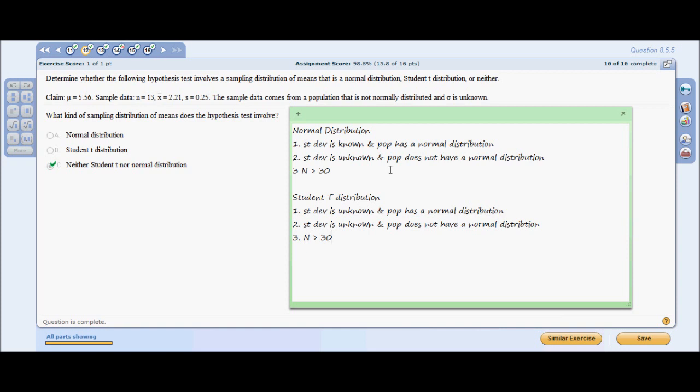Number 12: Determine whether the following hypothesis test involves a sampling distribution of means that is a normal distribution, student T distribution, or neither. The sample data comes from a population that is not normally distributed, and standard deviation is unknown. No calculations needed for this one. We need to rule out whether we need one, the other, or rule them both out.